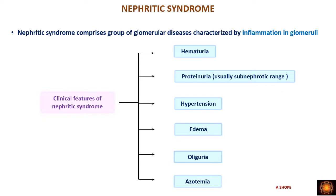Now what exactly is the nephritic syndrome? Nephritic syndrome comprises a group of glomerular diseases characterized by inflammation in the glomeruli. The manifestations we see in the nephritic syndrome are mainly because of inflammatory damage to the glomeruli. The clinical features typically seen are hematuria, proteinuria, hypertension, edema, and oliguria.